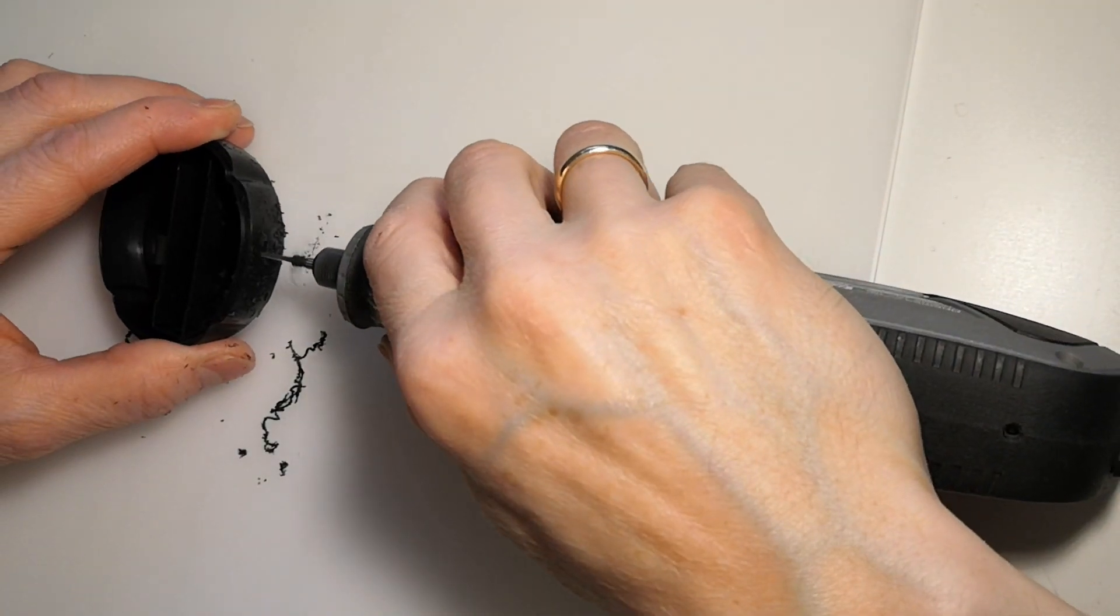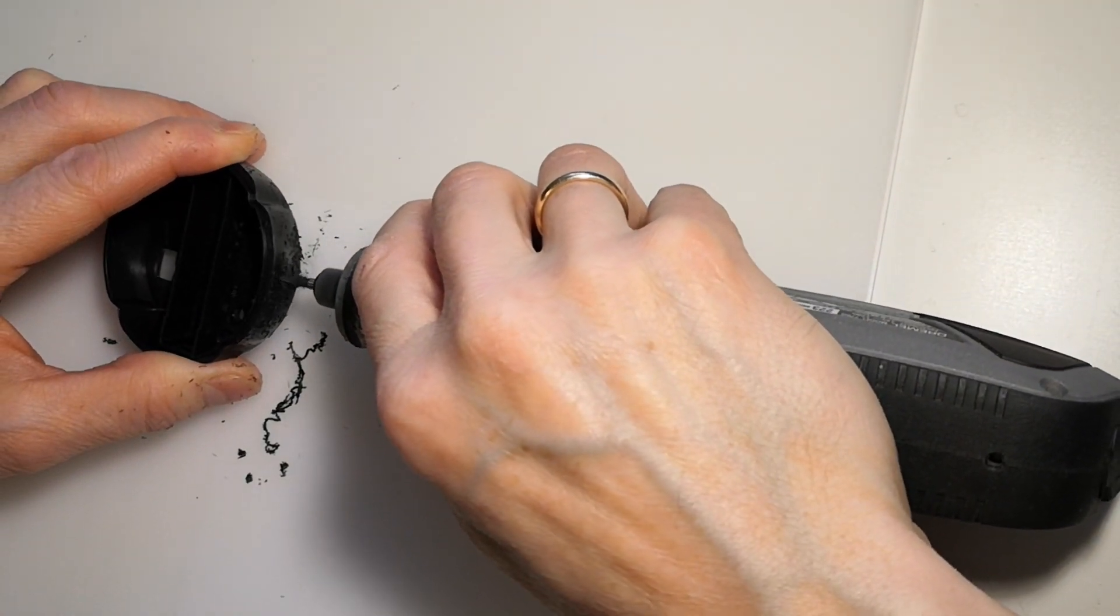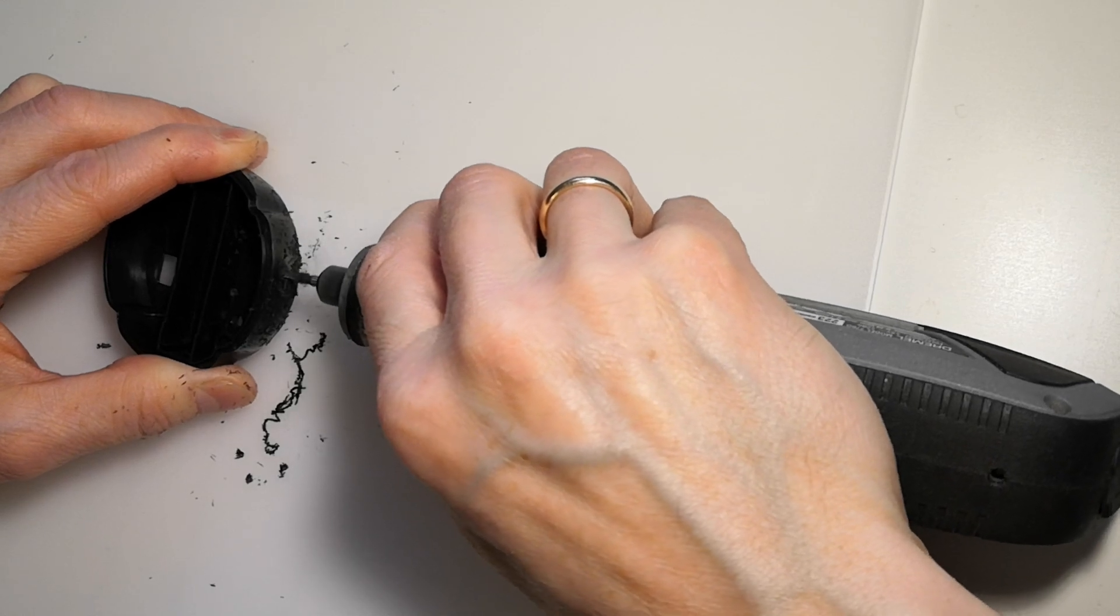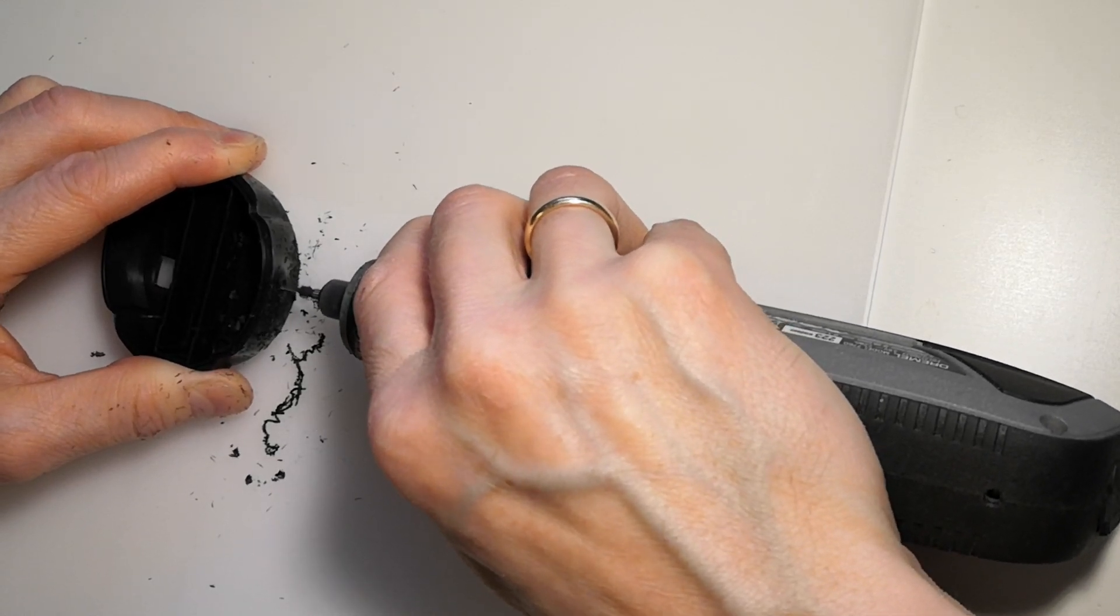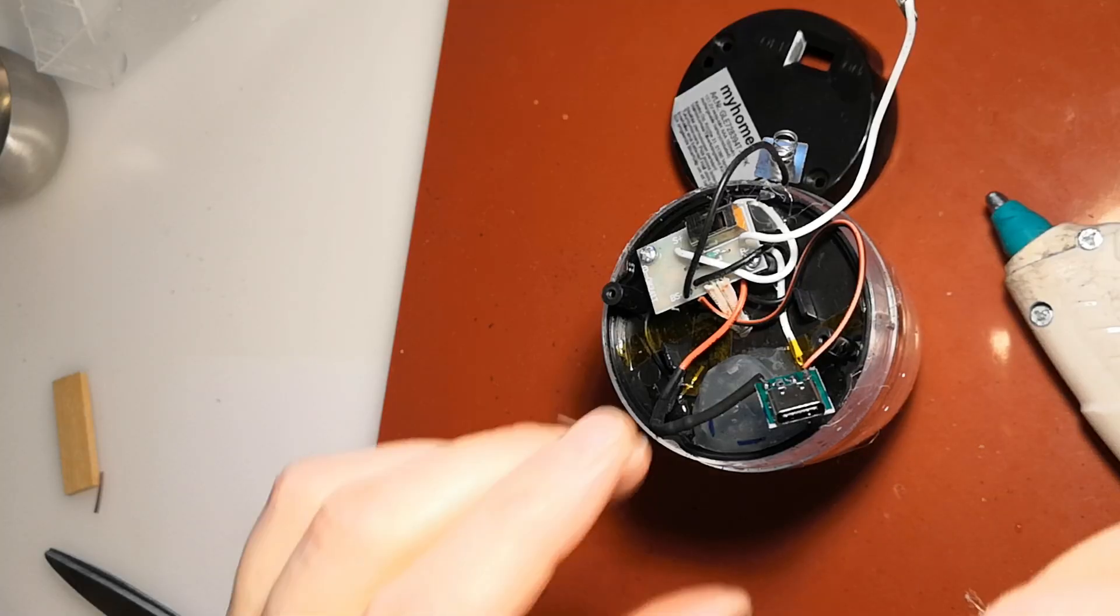We still need to drill a hole for the charging port on the side of the base. This was supposed to be a small task, but there's quite a bit of adjustment involved. The hole needs to be in the right spot.